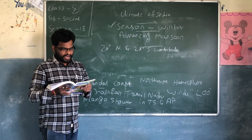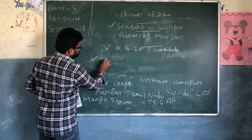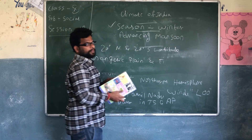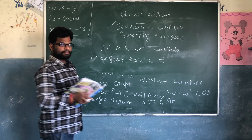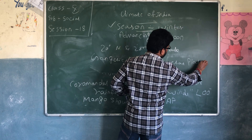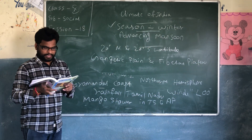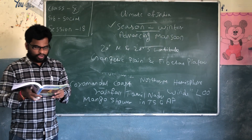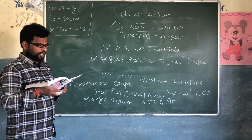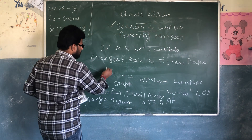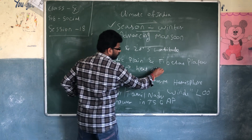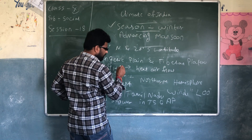Along with this, the Tibetan Plateau gets intensely heated and causes strong vertical air currents and the formation of low pressure over the plateau at about 9 kilometers altitude. Heat air flows at 9 kilometers altitude, keeping air flowing from one distance to another.